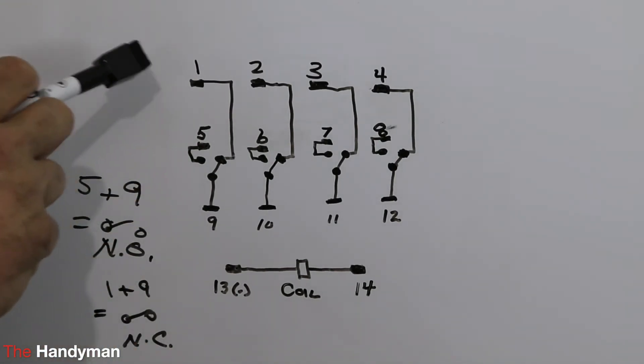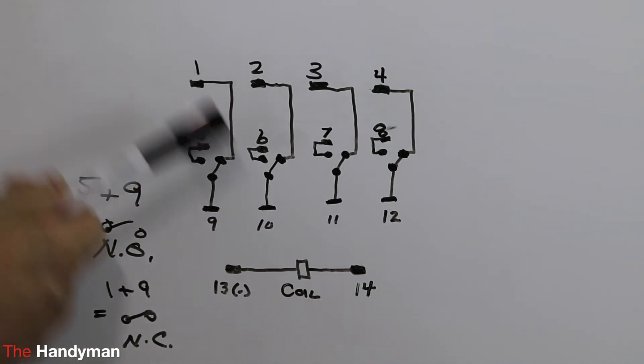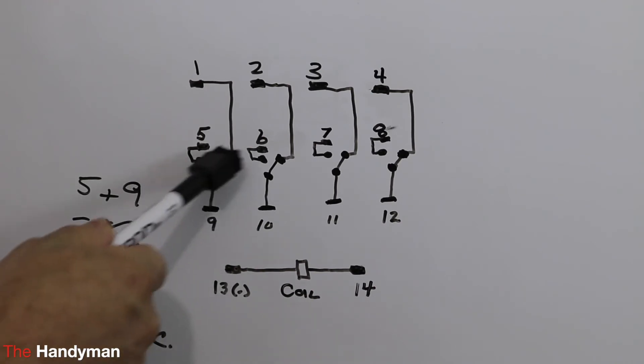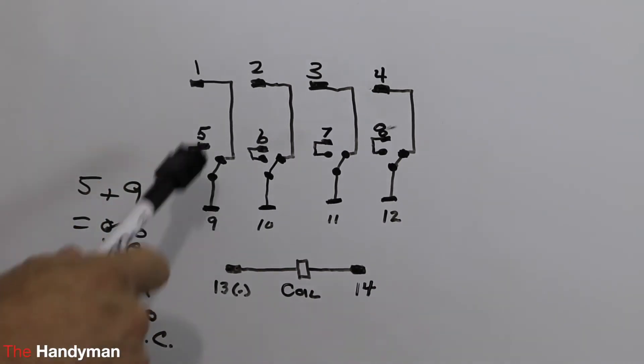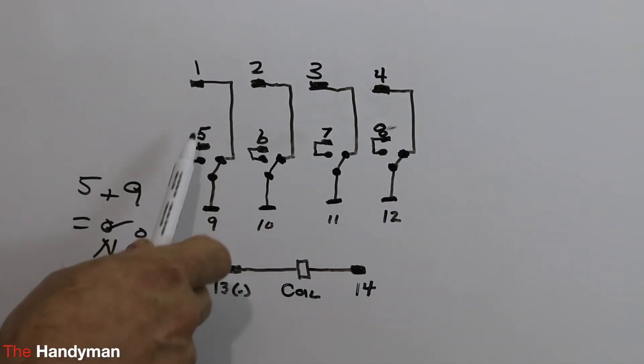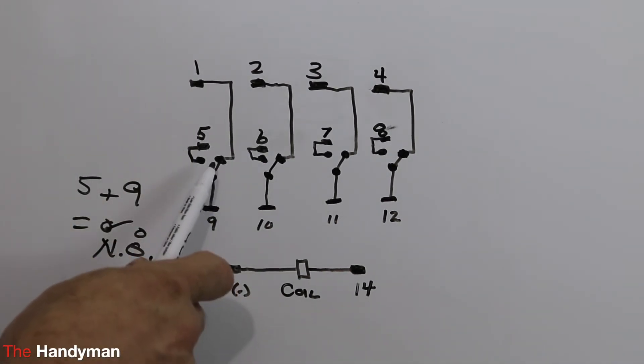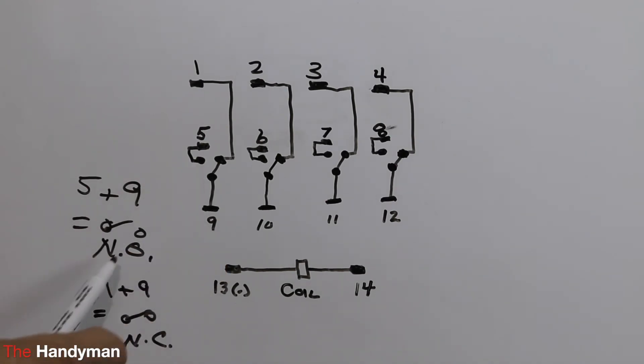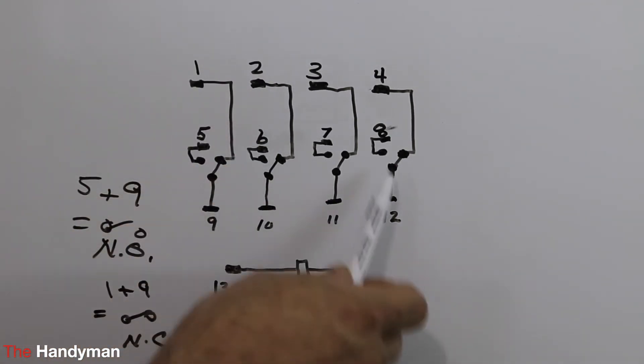So as we can see on the first set of contacts, pin one and pin nine has a complete path through it - that would make it normally closed. Pin five and pin nine have no contact between them, so that would be normally open. And as you can see, it goes the same for the rest of these.